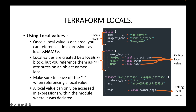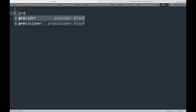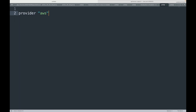A local value can only be accessed in expressions within the module where it was declared. This acts as a local variable — we won't be able to use it anywhere outside this configuration file. Now let's look at an example. I'm going to define my provider block and set the region to us-east-1.